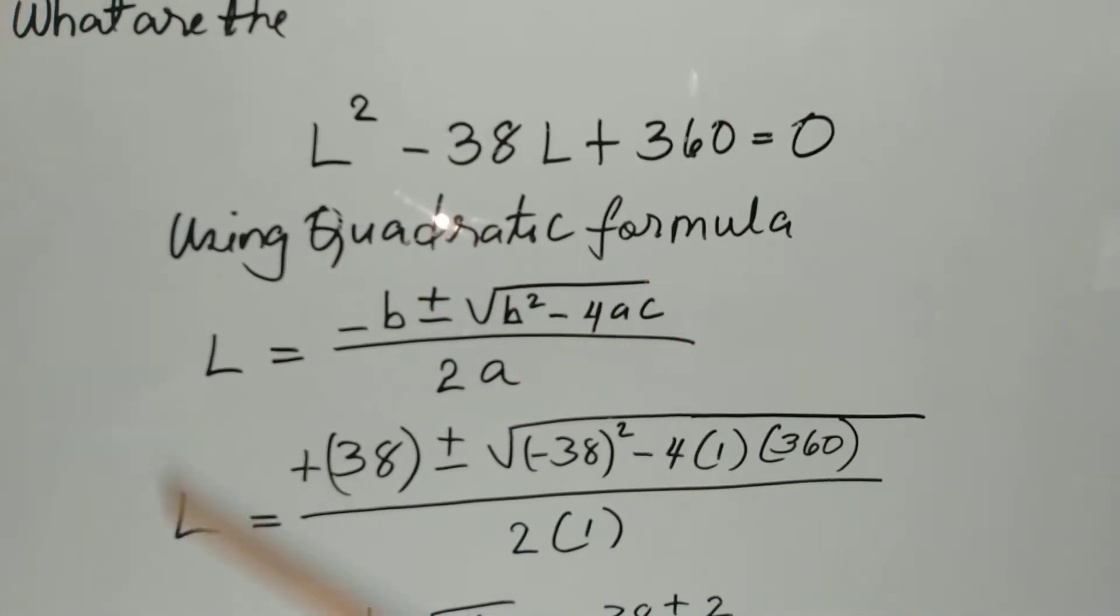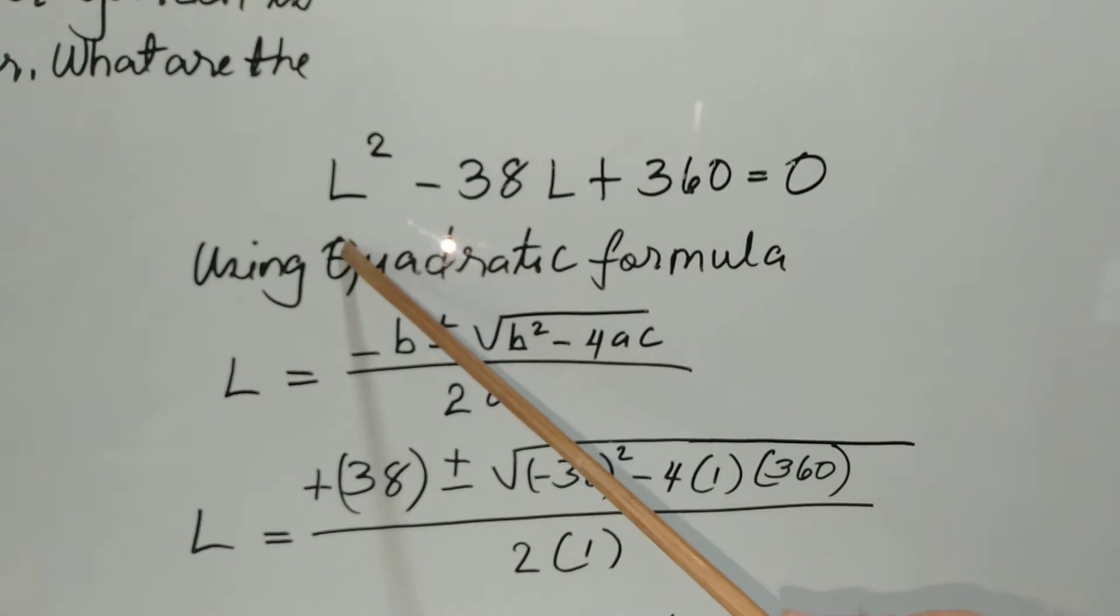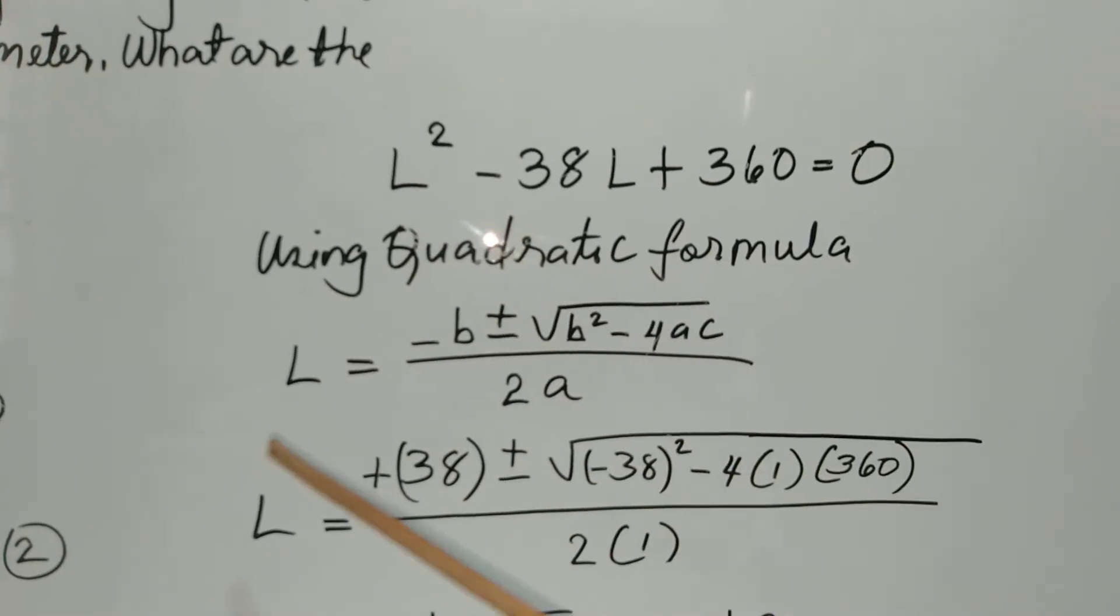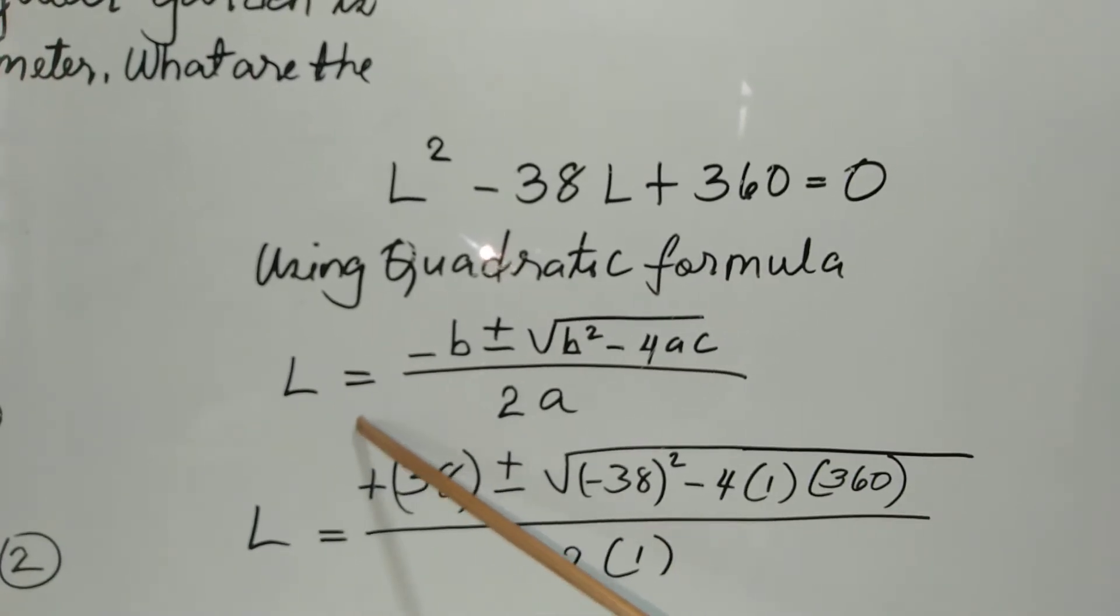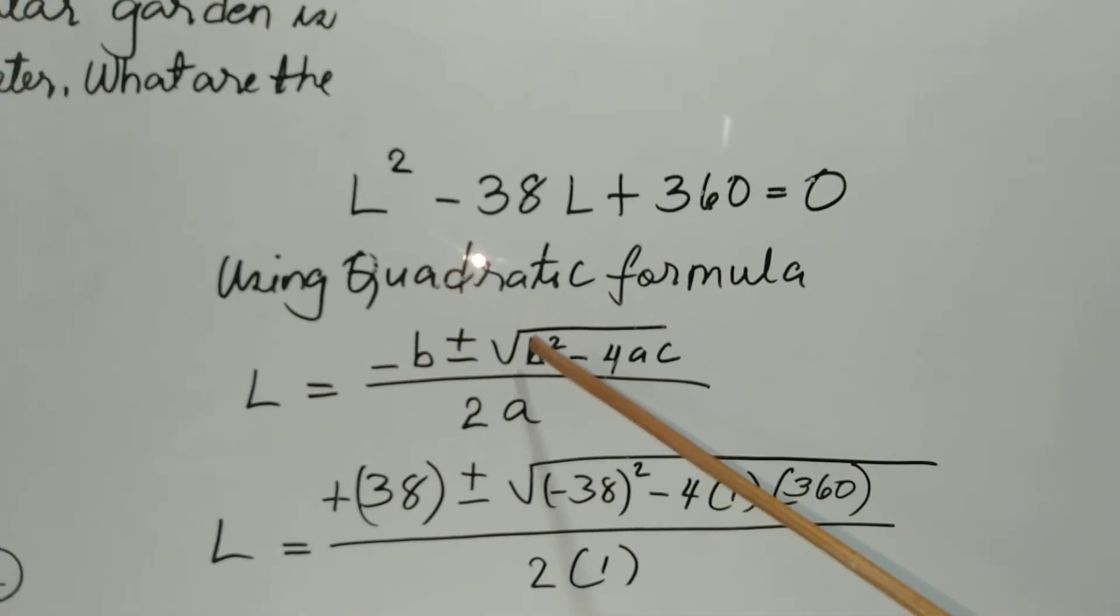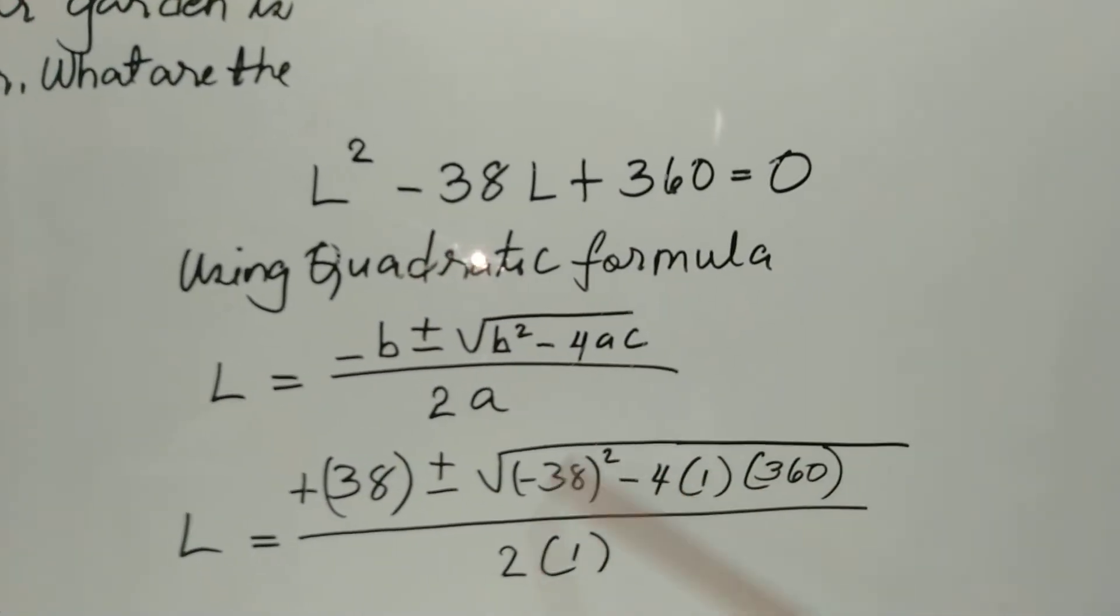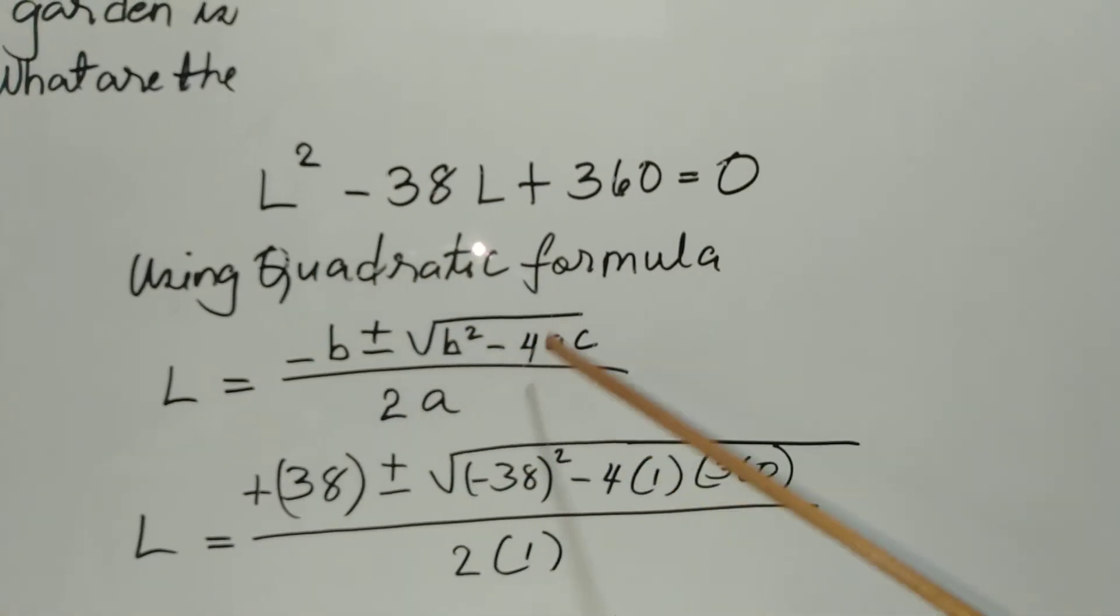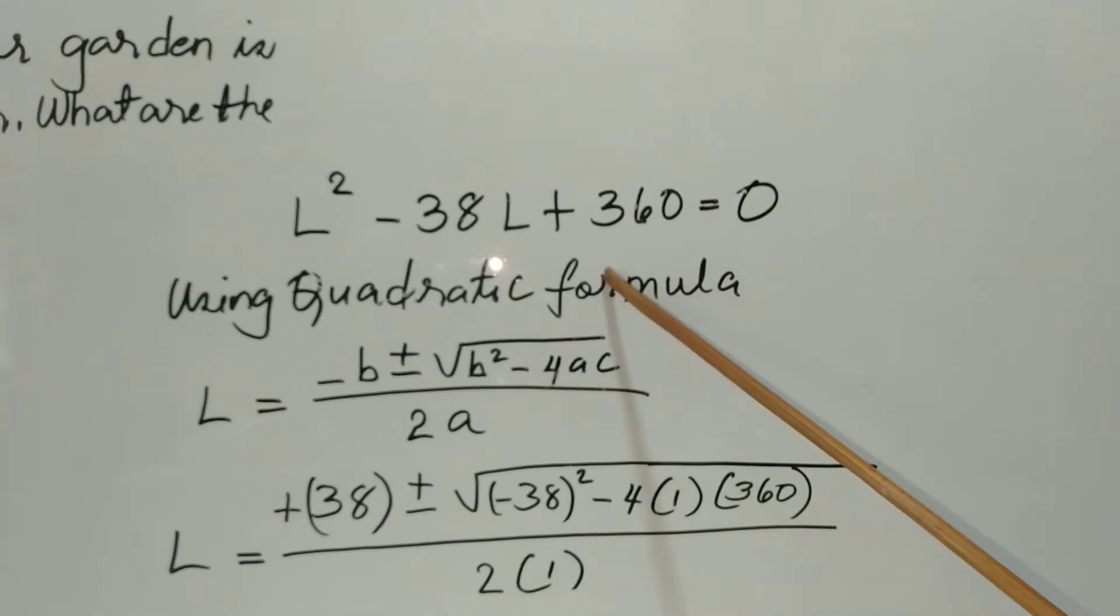This is the quadratic equation, so we're going to get the value of L by using the quadratic formula, where L equals negative B plus or minus square root of B squared minus 4AC, where B is the second coefficient, A is the first coefficient, and C is the constant term.